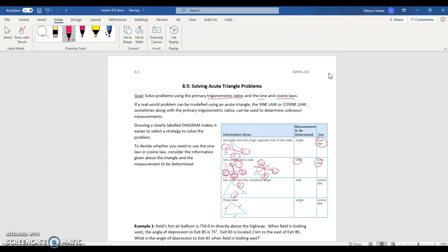Sometimes you might have two sides and a contained angle. It's usually the easiest one to spot. In that case you use your cosine law, and that helps you to find a side, like that one for example.